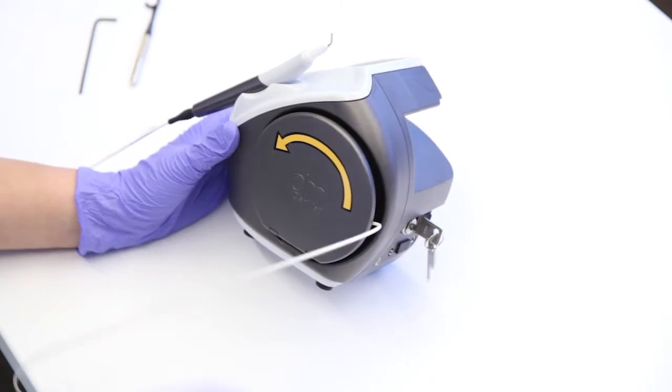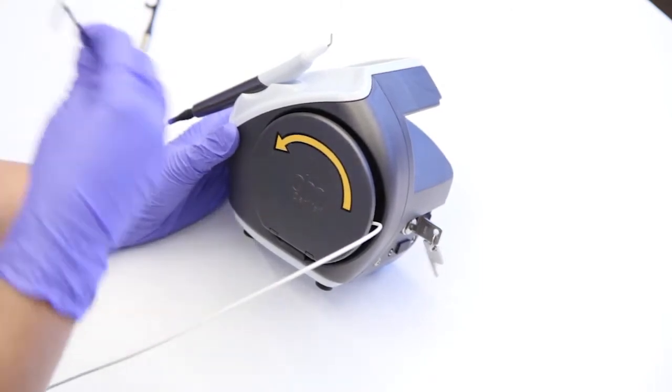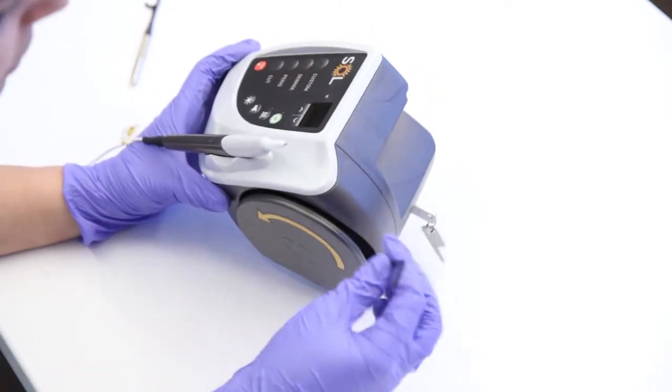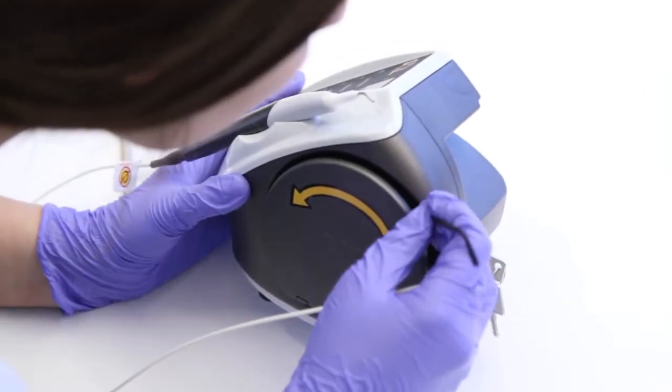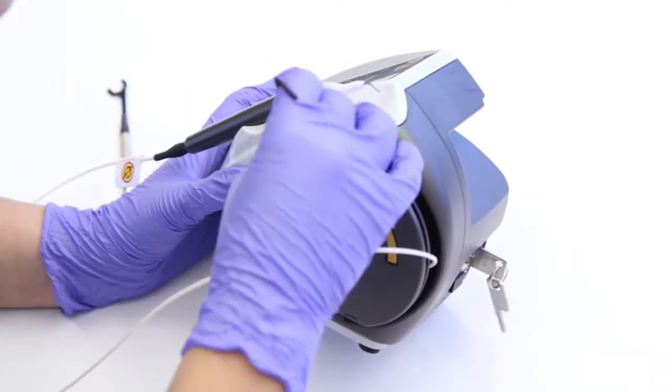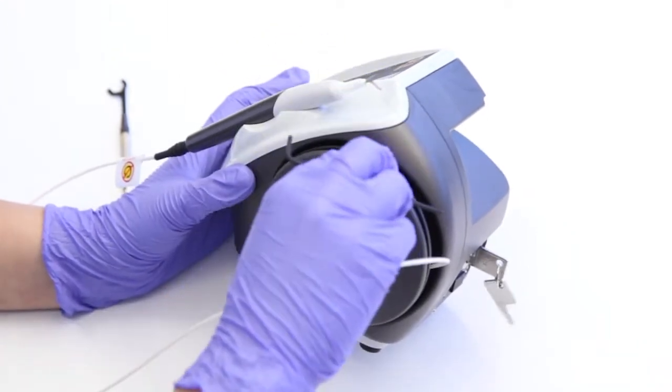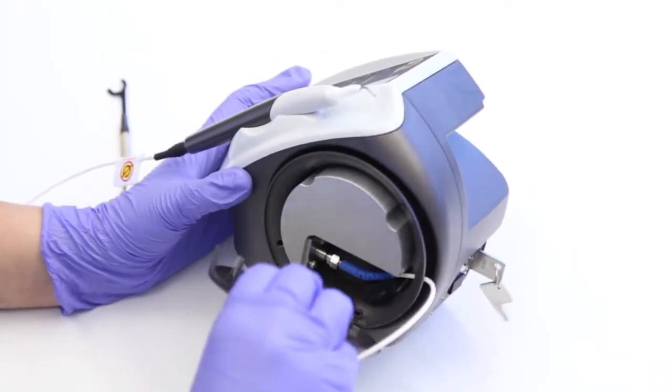First, locate the two locking tabs within the fiber wind cover, located roughly at 10 o'clock and 2 o'clock. Take the hex key and firmly press down on one locking tab at a time. Pop off the wind cover to expose the diode assembly aperture.